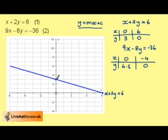So we need to draw on 0, 4.5 and minus 4, 0. We join the points to draw the line. And we should always label our lines.